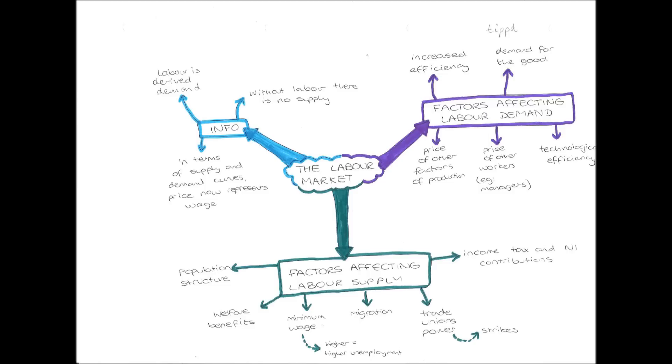And then our last two points affecting labour demand, we have the price of the other factors of production. So the price of land and the price of fixed and working capital, and the price of other workers, for example, managers. So if I have to spend more money on land, working capital, fixed capital, and other workers like managers, if these things are more expensive, that means I have less money to spend on actual workers, on the actual labour force. So therefore, I am not going to employ as many of them, so therefore the demand for labour will be lower.